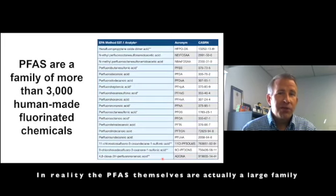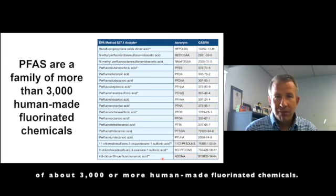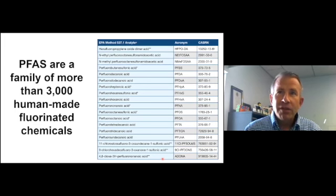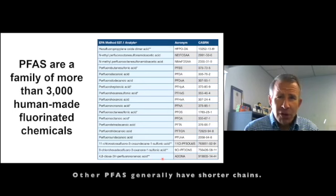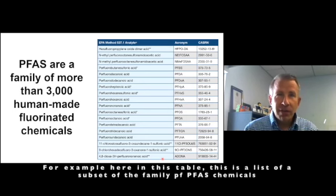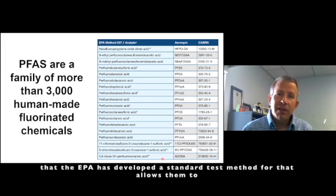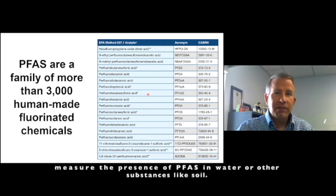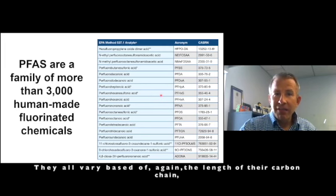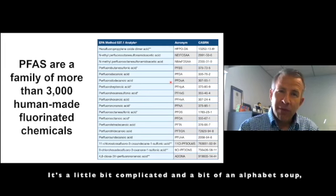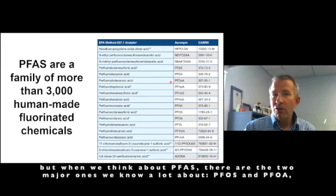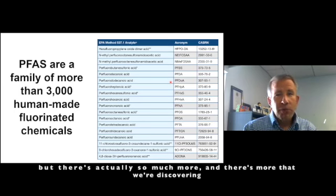PFAS themselves are actually a large family of about 3,000 or more human-made fluorinated chemicals. They vary primarily based on their size. PFOA and PFOS have eight carbon chains, while other PFAS generally have shorter chains. This table lists a subset of the family of PFAS chemicals that the EPA has developed a standard test method for, allowing them to measure the presence of PFAS in water or other substances like soil. They all vary based on the length of their carbon chain, giving rise to a similar acronym structure — it's a bit of an alphabet soup. There are the two major ones we know a lot about, PFOS and PFOA, but there's actually so much more.